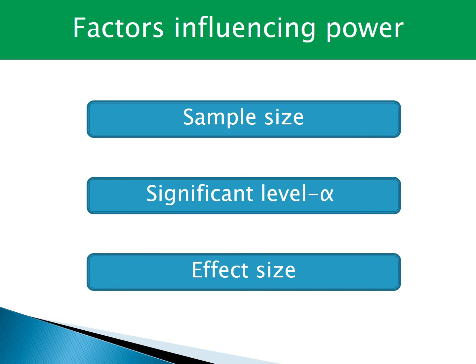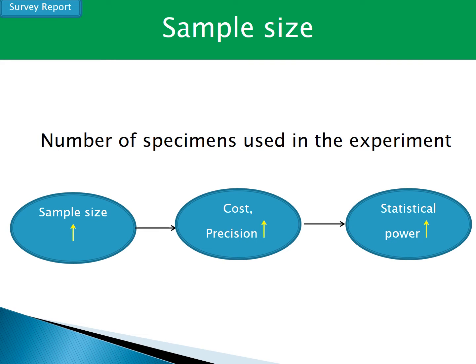As mentioned, there are three factors influencing power: sample size, significant level (also called alpha), and effect size. The first factor, sample size, is the total number of samples used in the experiment. If the sample size is large, the accuracy and statistical power of the experiment will increase, but the cost will also increase. So it is important to obtain an appropriate sample size using minimal cost.